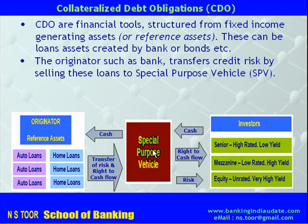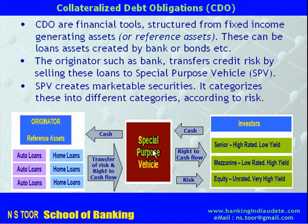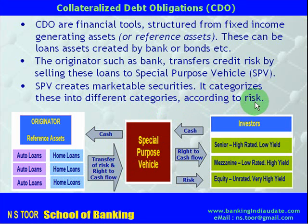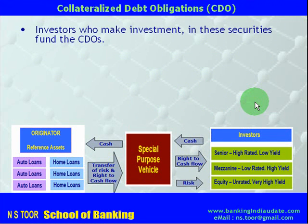What does the special purpose vehicle do with these? On the basis of future recovery from these loans, the special purpose vehicle creates marketable securities. Those marketable securities are categorized into different categories according to the risk they carry. Thereafter, investors make investment in these securities, effectively funding the CDOs.